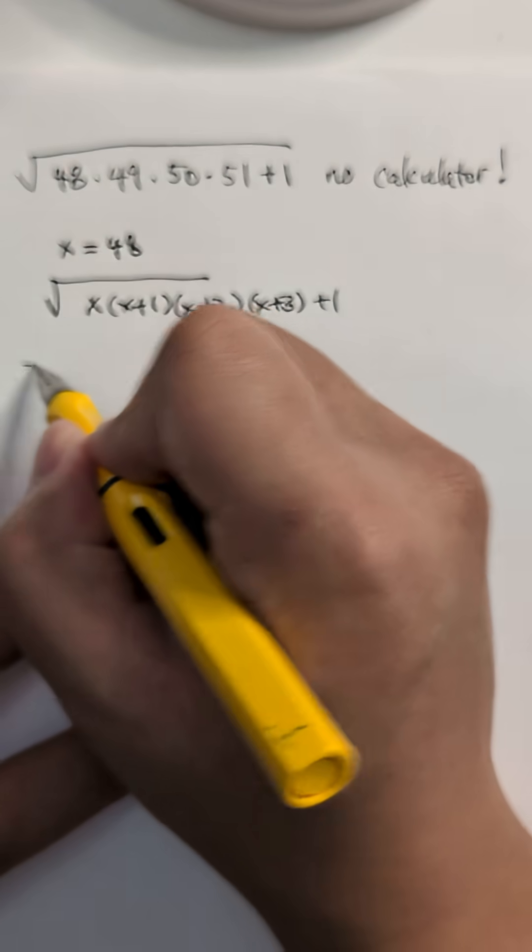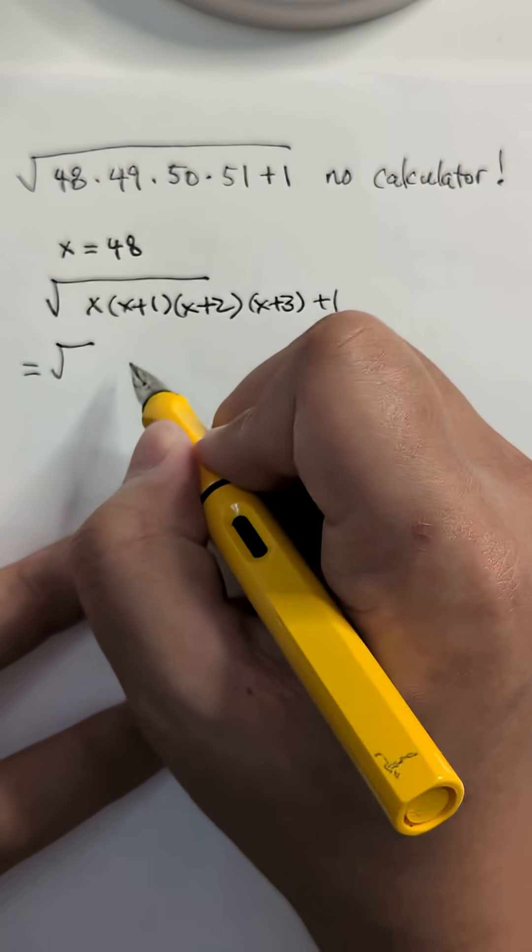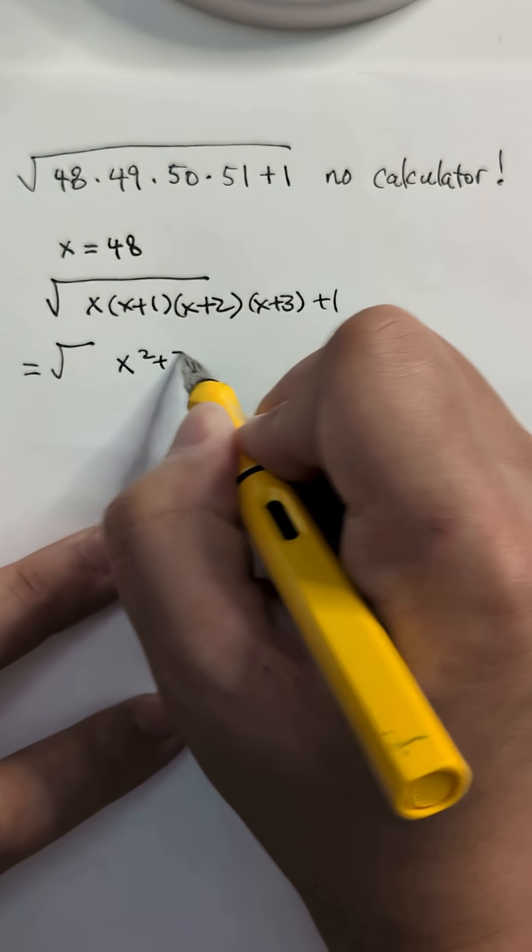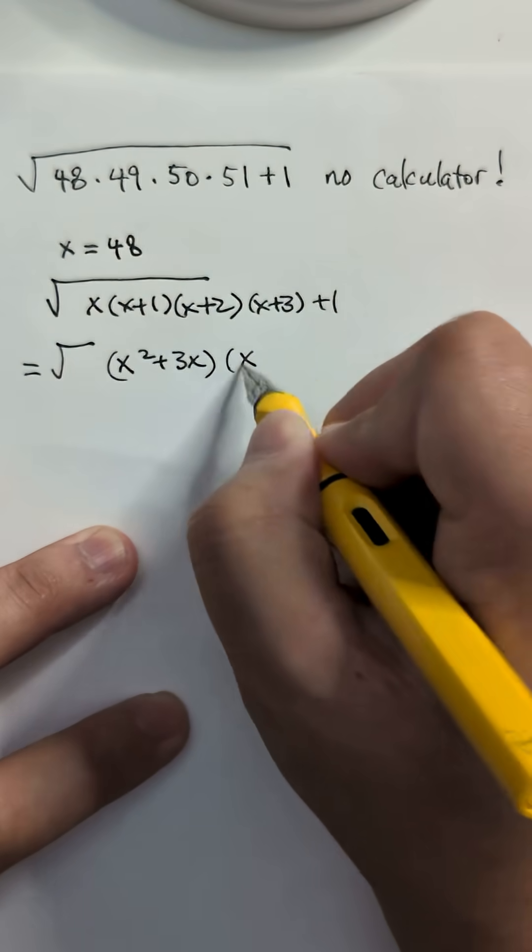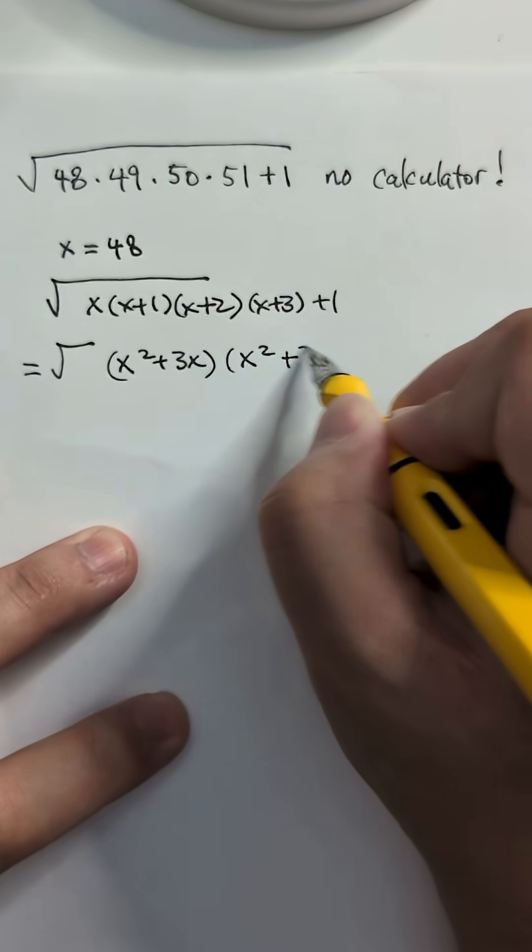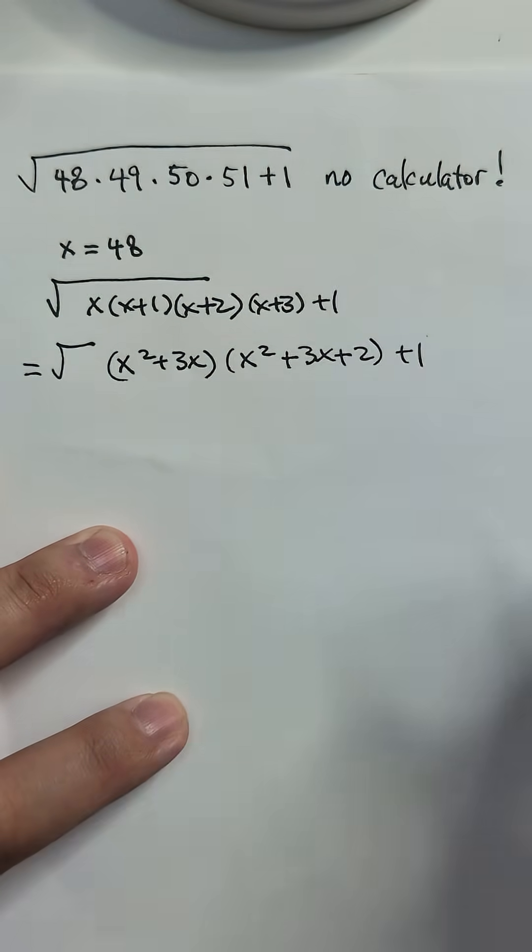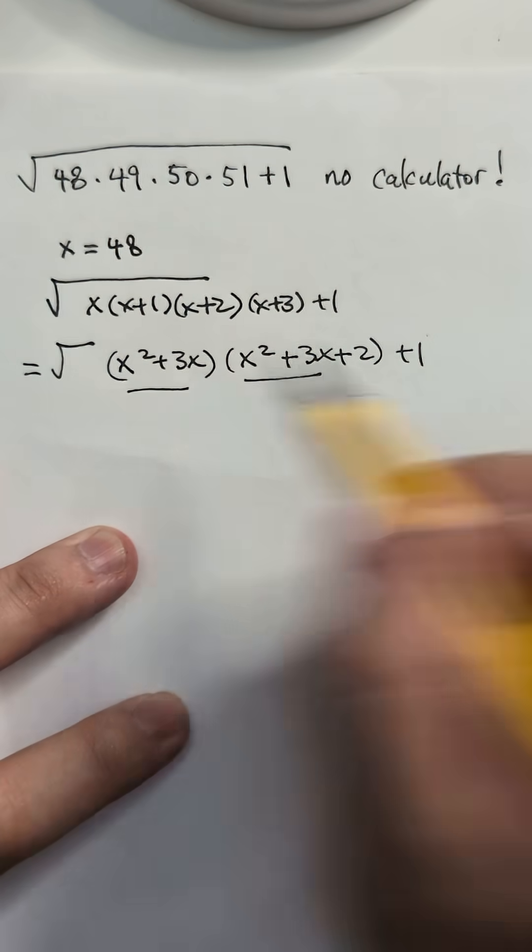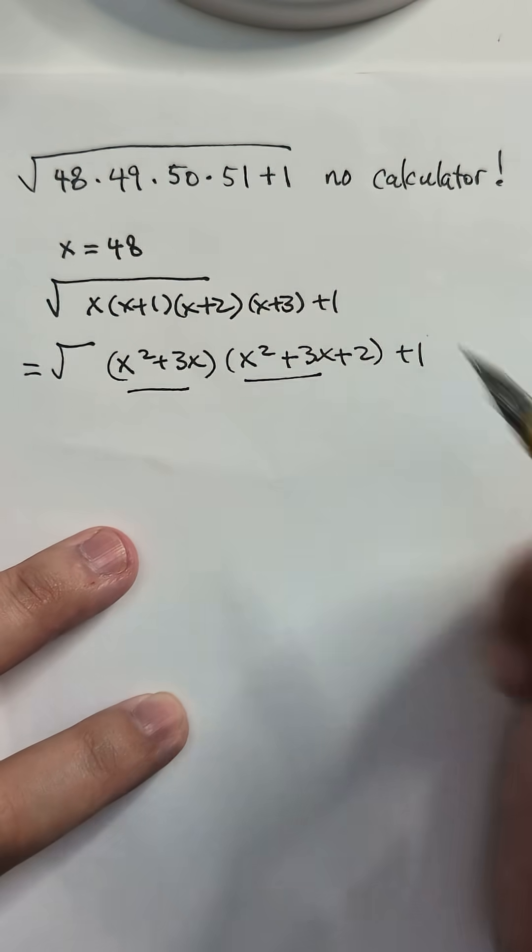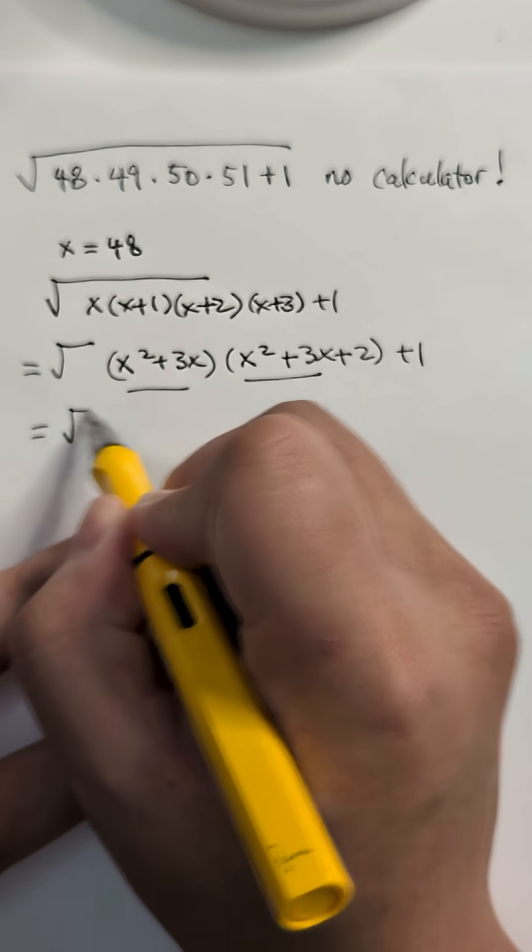And then we multiply. I'm just going to do the simple sign here. So x squared plus 3x and then x squared plus 3x plus 2, plus 1. By the way, you cannot just substitute out x squared that way. You actually have to multiply it up.